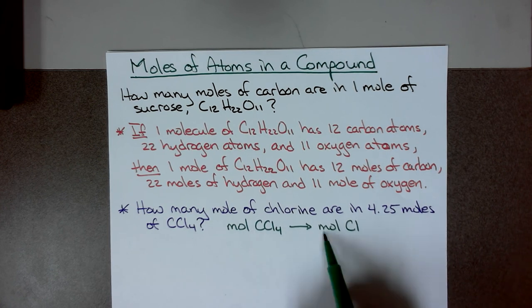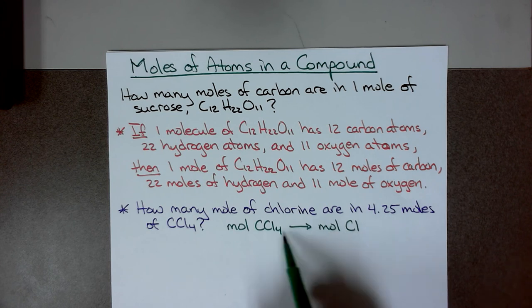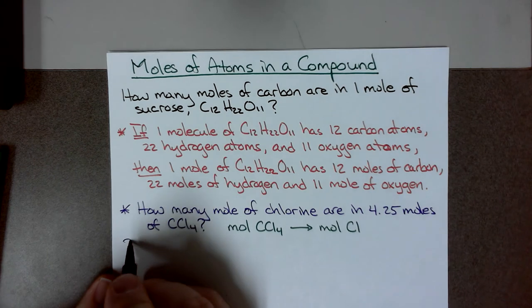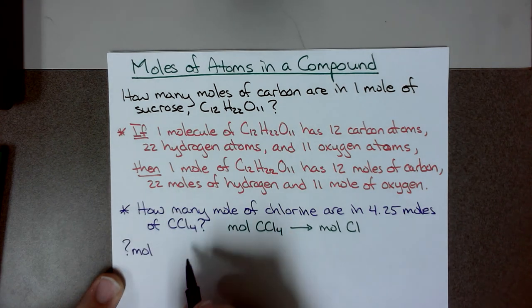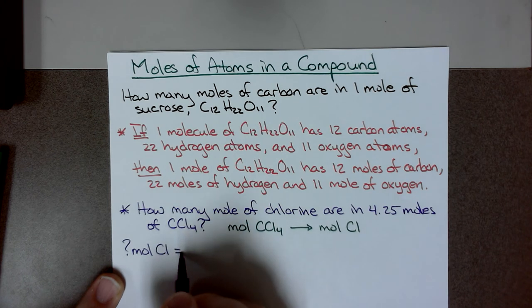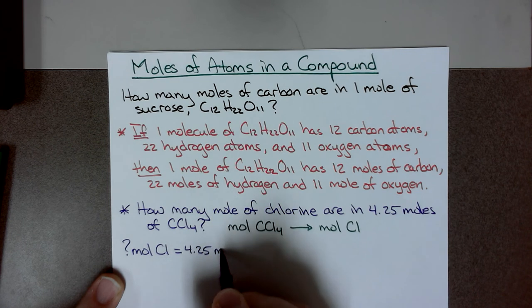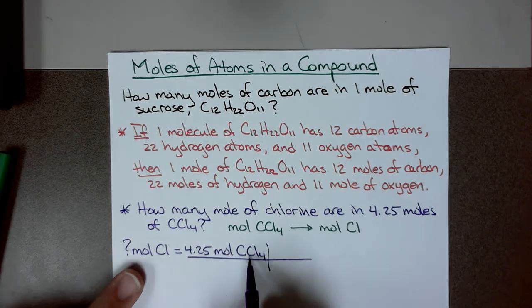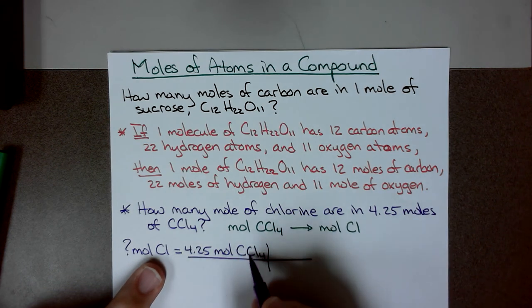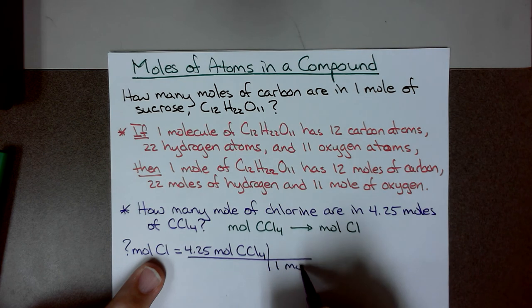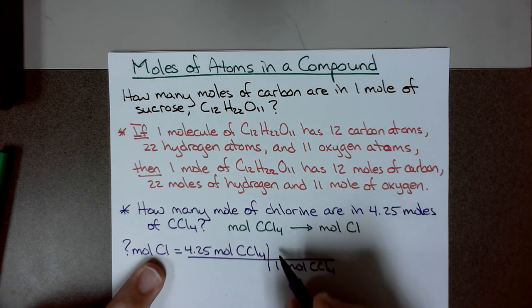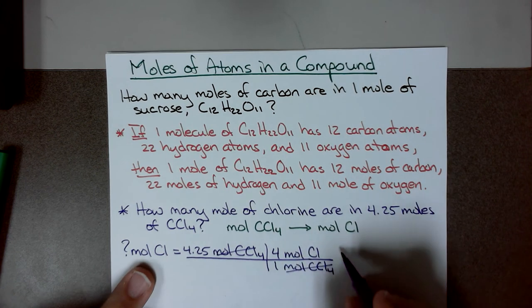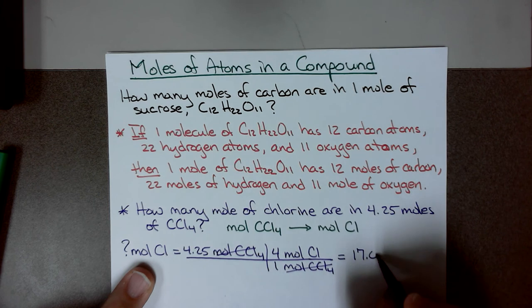Let's solve this. Question mark: how many moles of chlorine are in 4.25 moles of carbon tetrachloride? I know that one mole of CCl4 contains 4 moles of chlorine, because of the subscript. I put CCl4 on the bottom and 4 moles of Cl on top. Multiplying gives 17.0 moles of chlorine.